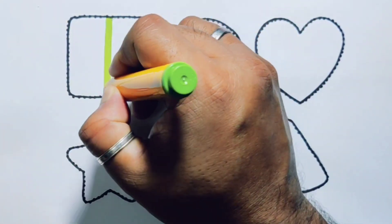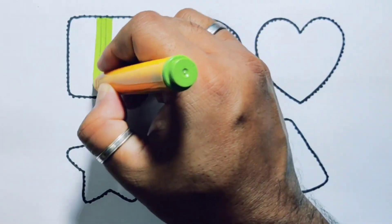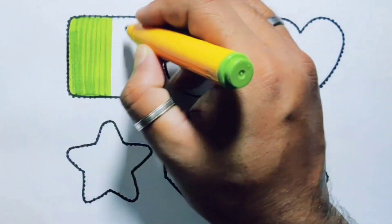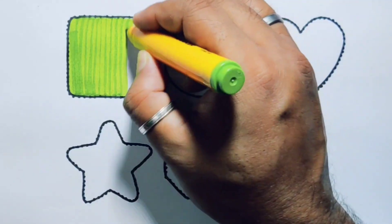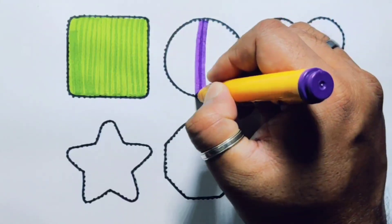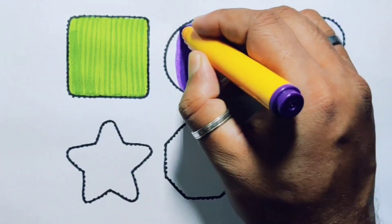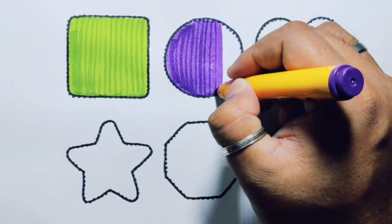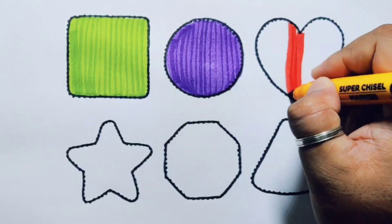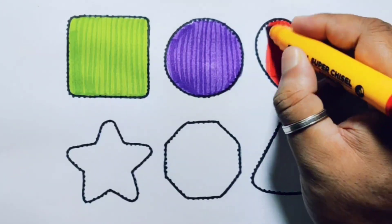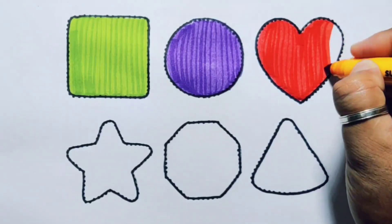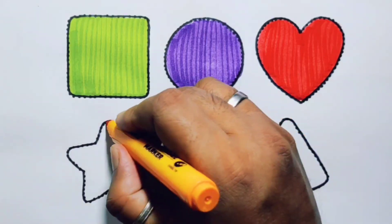Now we're going to put the color. Green color square. Purple color circle. Red color heart. Orange color star.